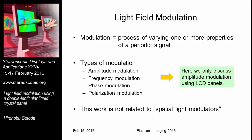In signal processing terms, modulation refers to the process of varying one or more properties of a periodic signal. There are many types of modulations: amplitude modulation, frequency modulation, phase modulation, and polarization modulation.